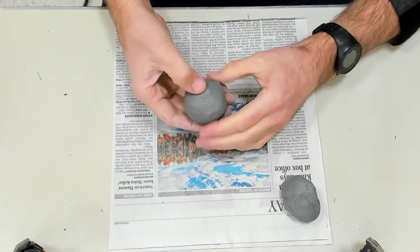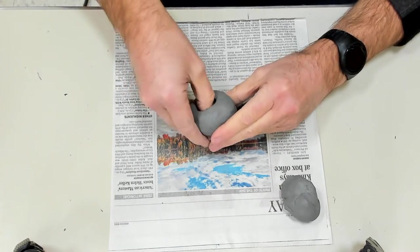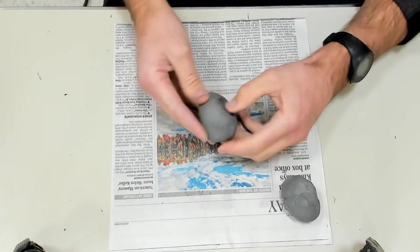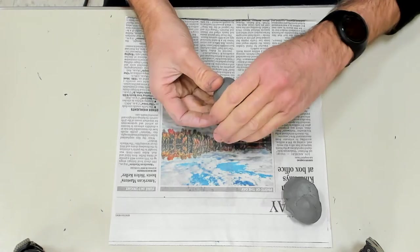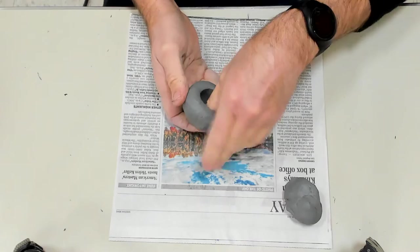This is a pinch pot. We start by pushing our thumb down and then only put one thumb inside. Start on the bottom, work your way around, and slowly work your way up to the top.